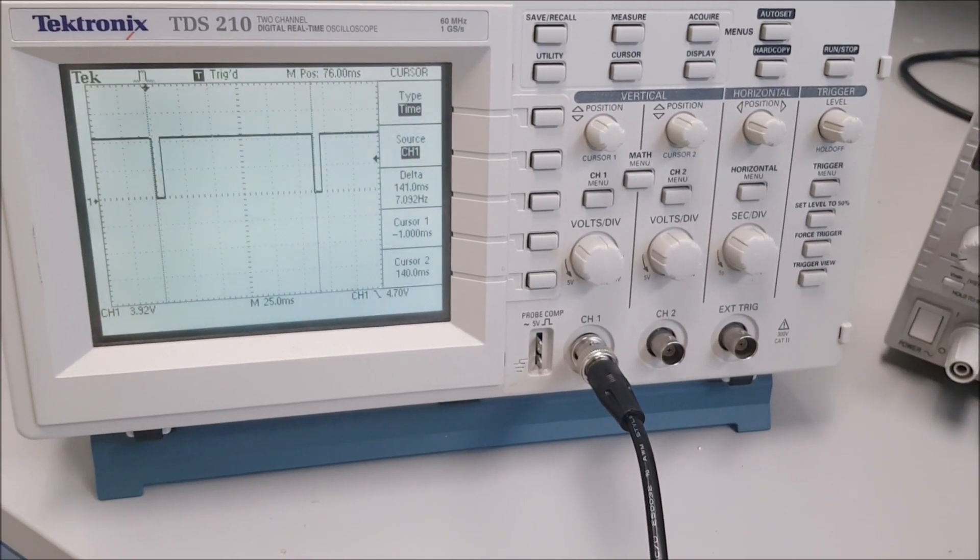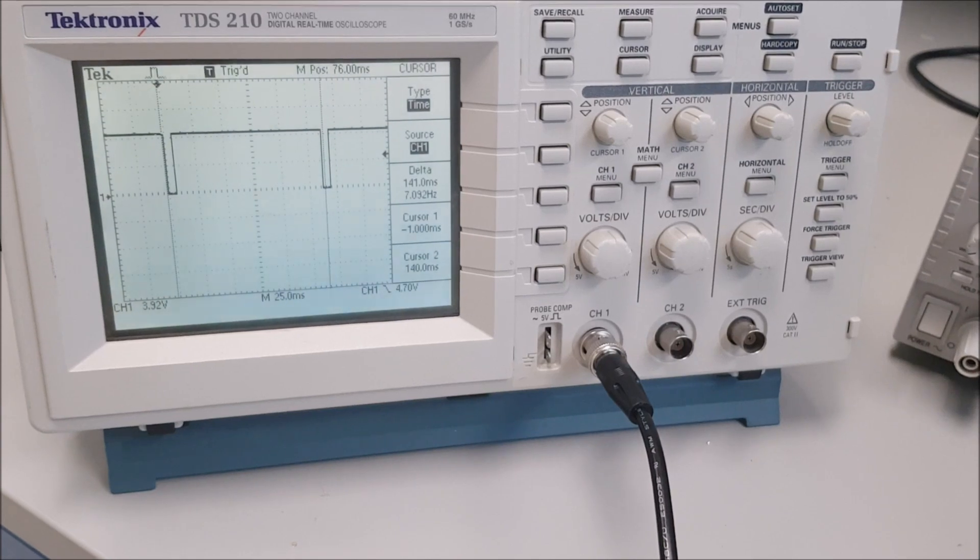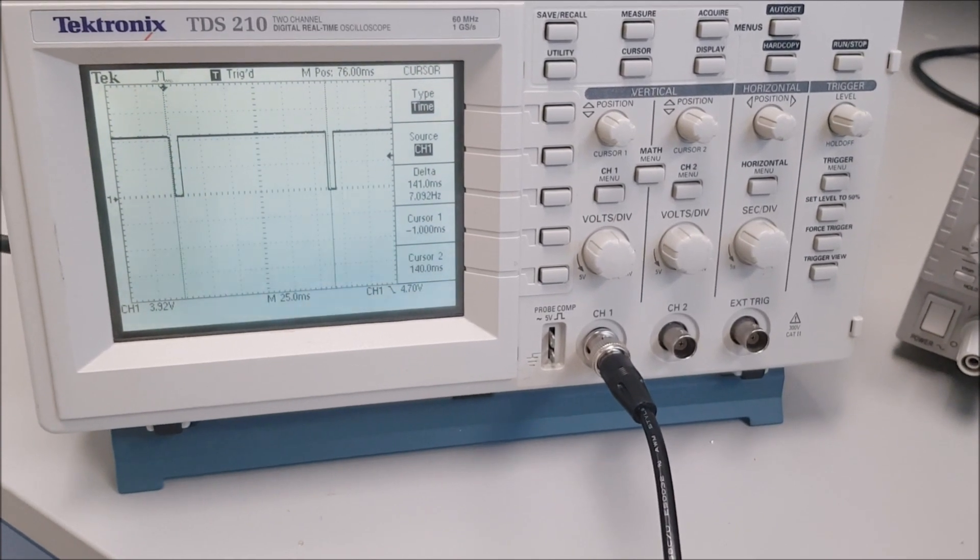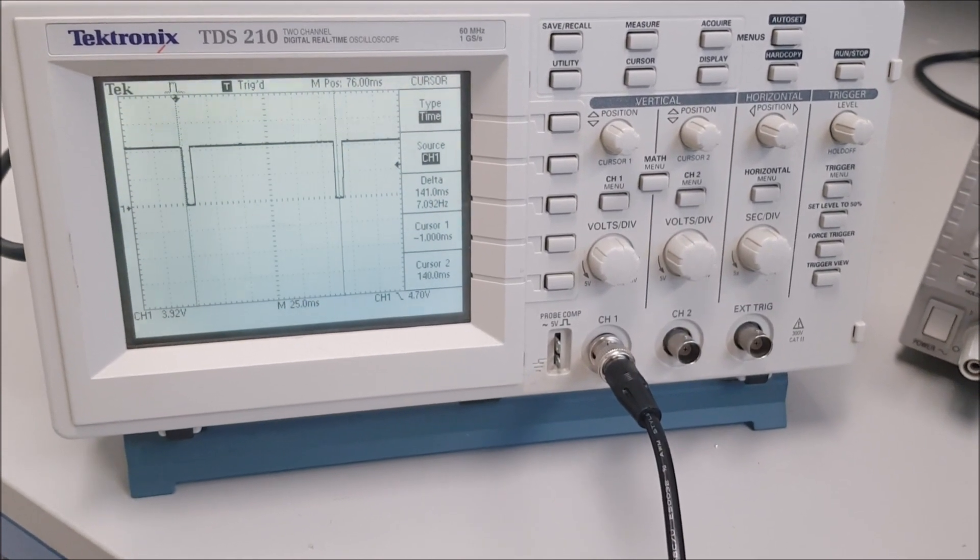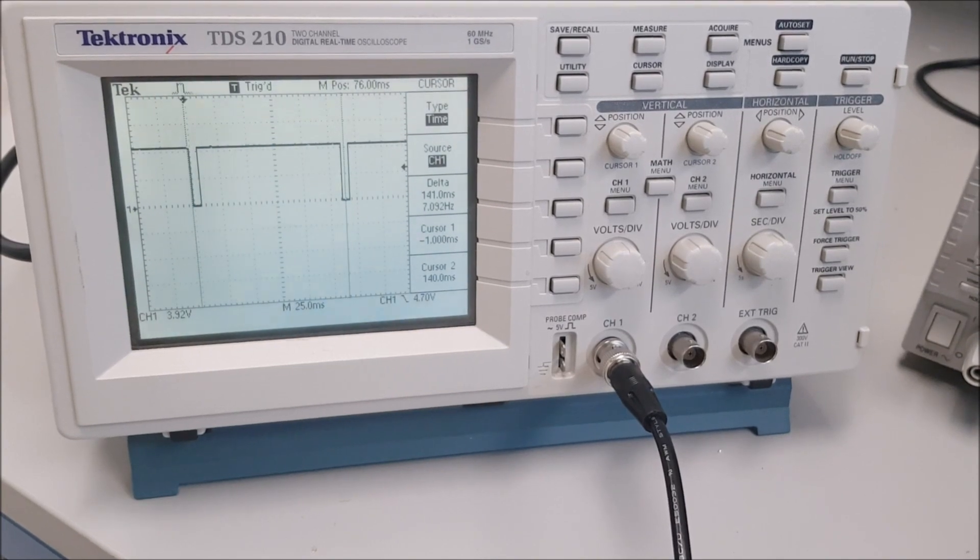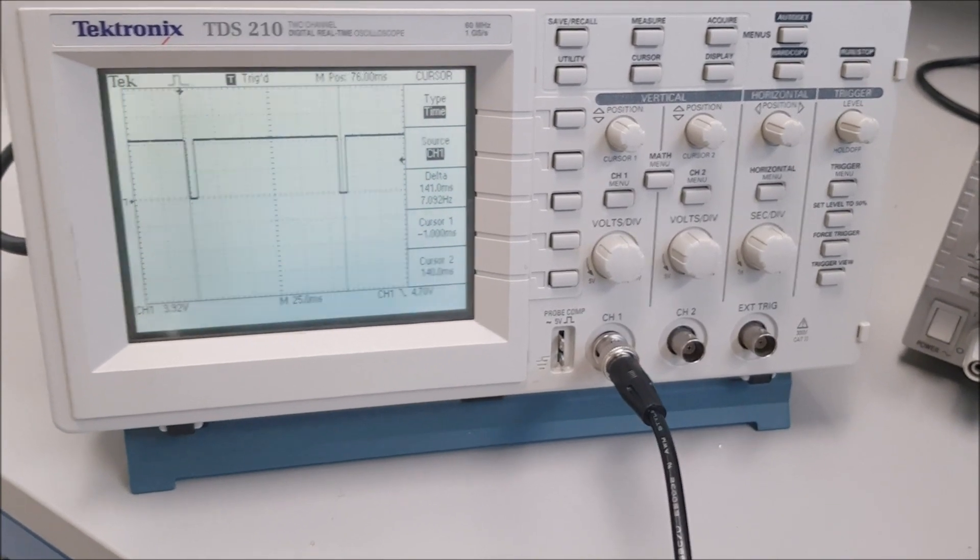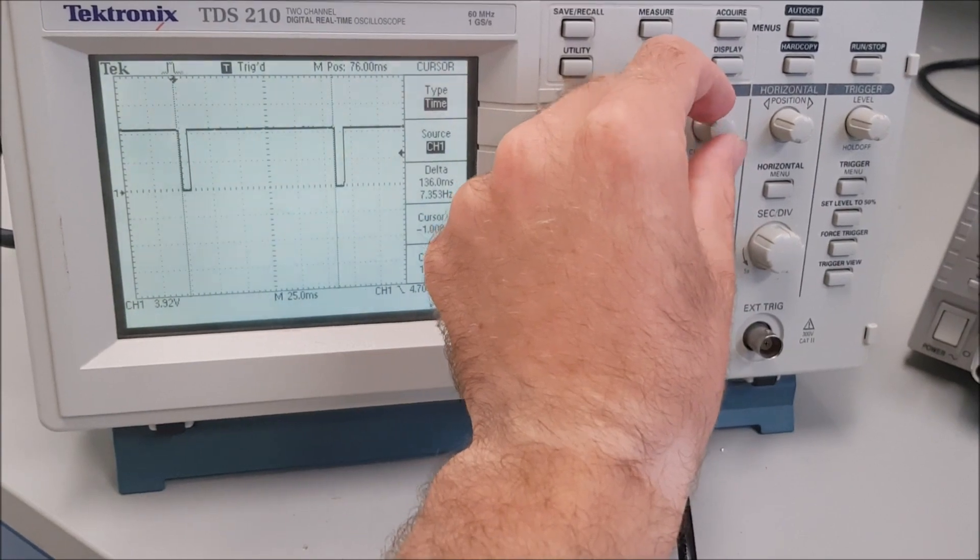That's 7 hertz, so 7 times per second. Multiply that by 60 and you get the RPM - about 420 revolutions per minute.